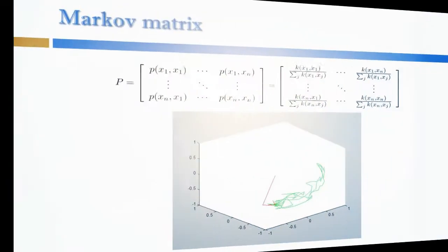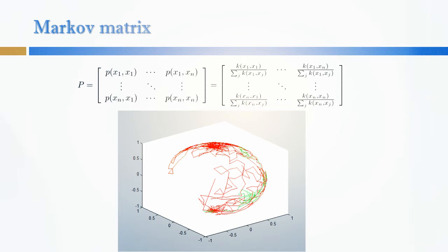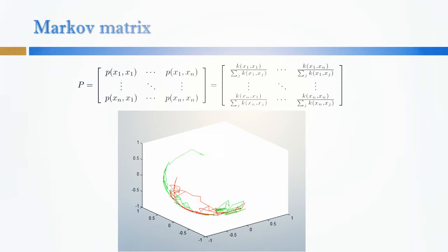The Markov matrix represents the likelihood of two points being related. In our case we create them by normalizing the rows of the heat kernel. Here you see a random walk moving in accordance to the Markov matrix.